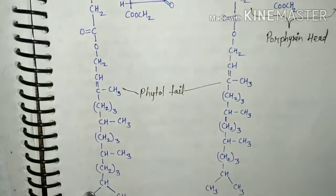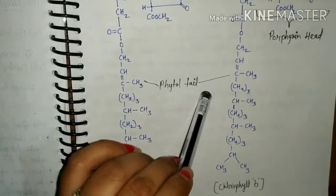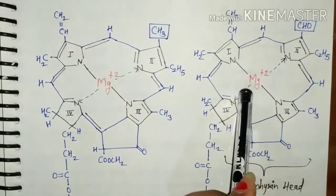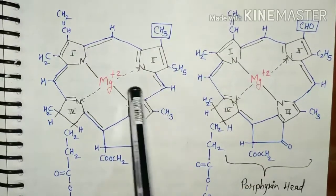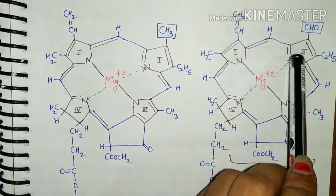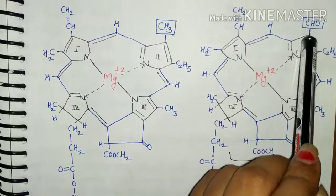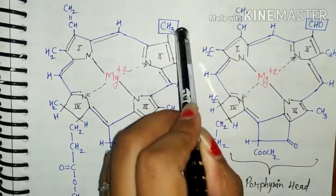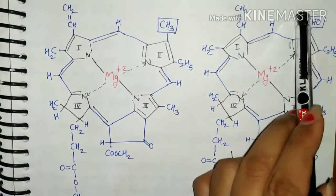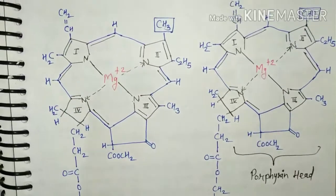This long hydrocarbon chain is hydrophobic in nature and is called the phytol tail of chlorophyll. Regarding the structure of chlorophyll B: chlorophyll A and chlorophyll B are generally similar in structure, but there is a difference at the second pyrrole ring. In chlorophyll A, a methyl group is added at the third position of the second pyrrole ring, whereas in chlorophyll B a CHO group is present at that position. All other structures are similar in chlorophyll A and chlorophyll B.